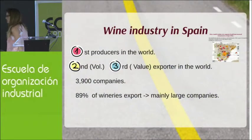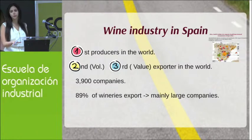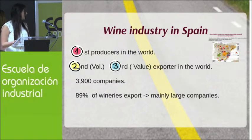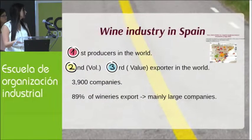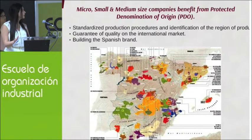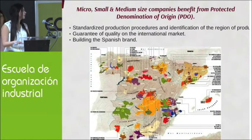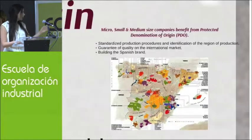Regarding the wine industry in Spain: they are considered the first producer in the world by vineyard area, second in terms of volume, and third exporter in the world. There are 3,900 companies and 89 percent of wineries export, where there are mainly large companies. Regarding micro, small, and medium-sized wineries, they benefit when they adopt the PDO — Protected Denomination of Origin — because they follow standardized production procedures that help them enter the international market and build the Spanish brand.